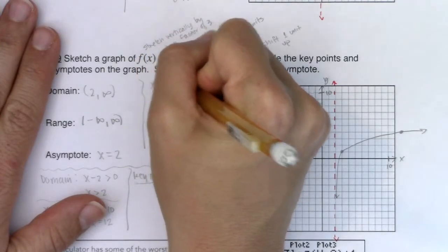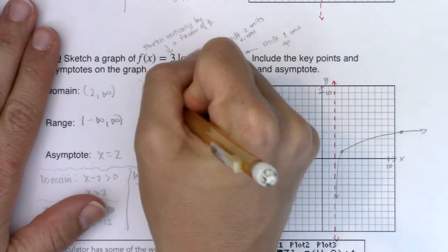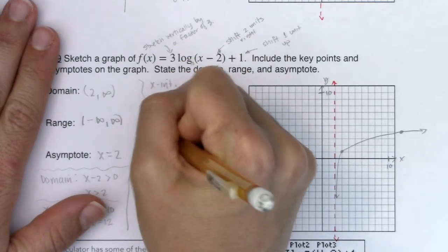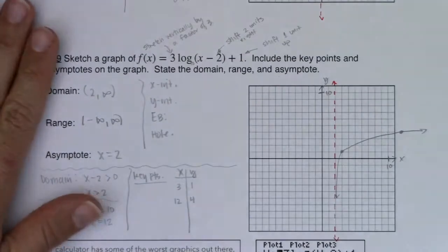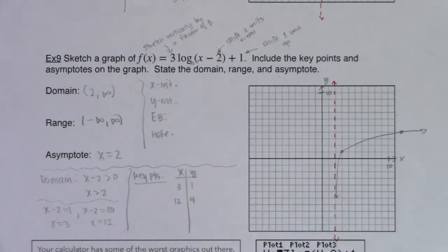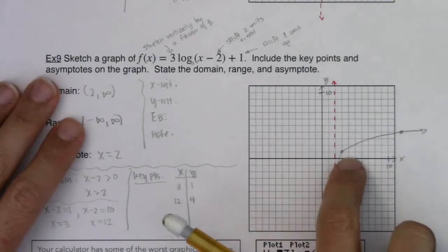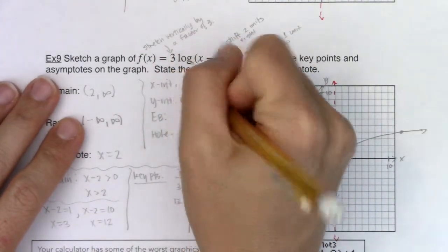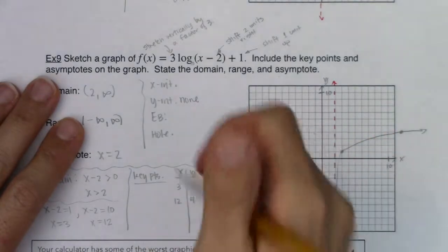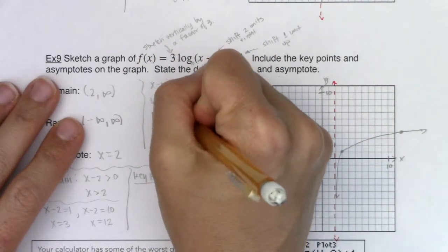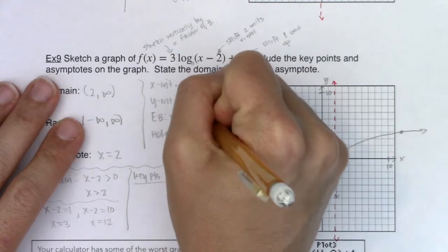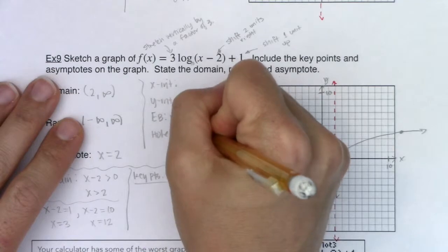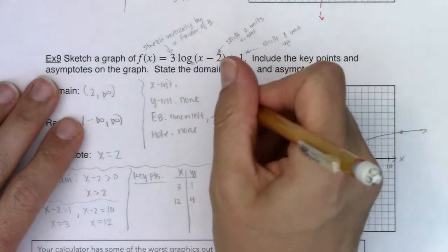We're going to go x-intercept, y-intercept, end behavior, and holes. I'm going to save the x-intercepts to the end. I put for my y-intercept, 0 is not in my domain, I have none. For my end behavior, I have nothing on the left and I have right arrow up. For holes, I've got no fractions in this argument, so I've got none.